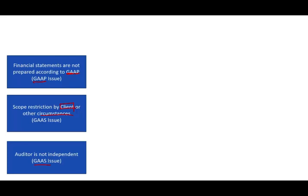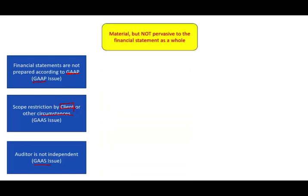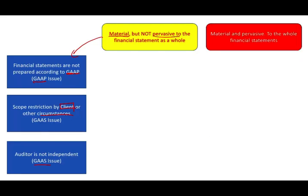When we don't give a clean opinion, we look at the materiality of the issue. The issue could be material but not pervasive to the financial statements as a whole, or it could be material and pervasive to the whole financial statements. If it's not material, we don't have to worry about it. We only need to act if it's material, and then we assess whether it is pervasive or not.